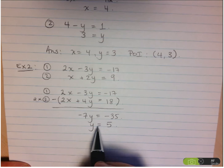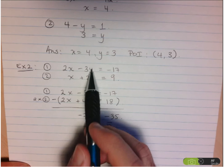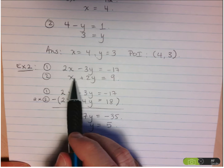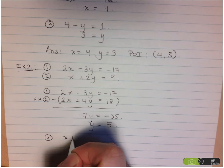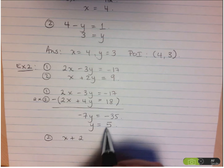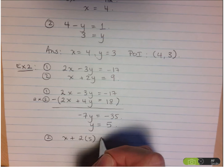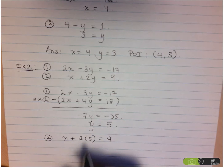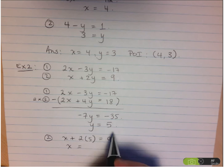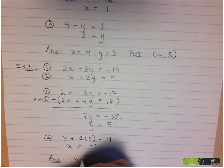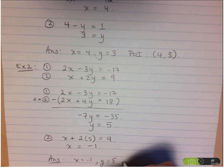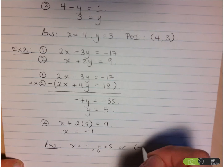Now I do the same thing as before: take the value for y and substitute it into one of the two equations. Equation 2 looks like the easier one to work with. So x plus 2 times 5 equals 9. Here 2 times 5 is 10, and 9 minus 10 gives x equals negative 1. So x equals negative 1, y equals 5, or in point form, the answer is (negative 1, 5).